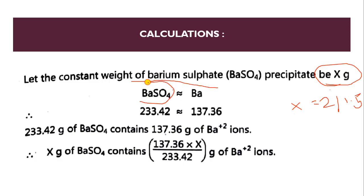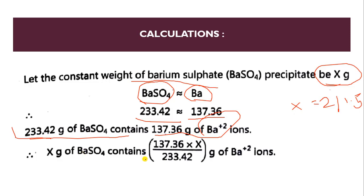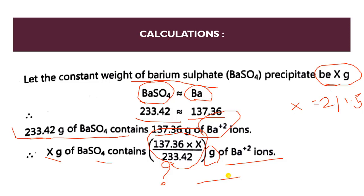The molecular formula weight of BaSO₄ is 233.42, which is equivalent to barium at 137.36 g. Using this formula: 233.42 g of BaSO₄ contains 137.36 g of barium ions. So x g of BaSO₄ contains a proportional amount of barium — this gives us the grams of barium present in the precipitate. We should obtain our precipitate in the specific amount by gravimetric analysis.